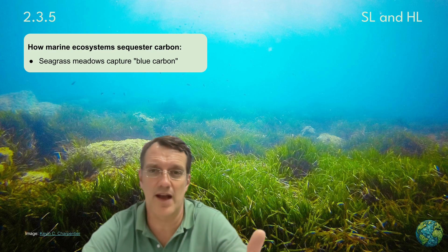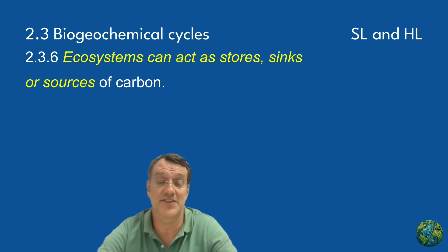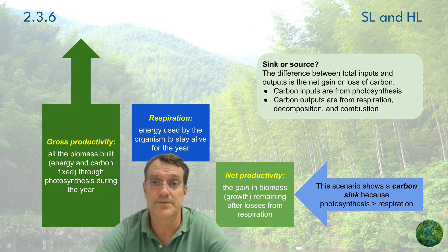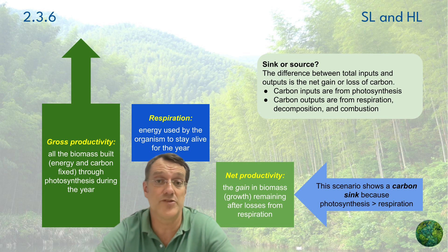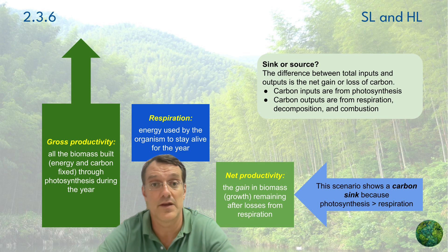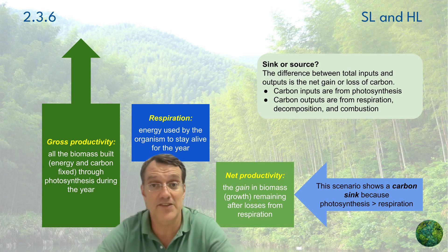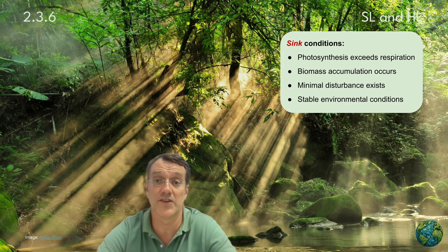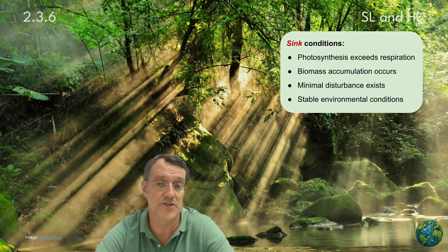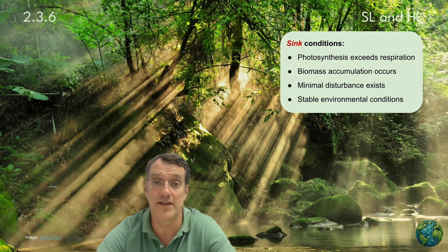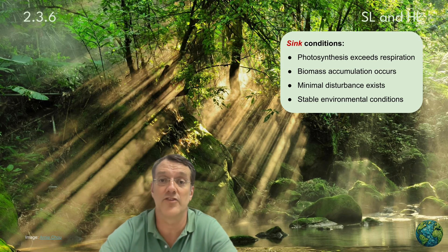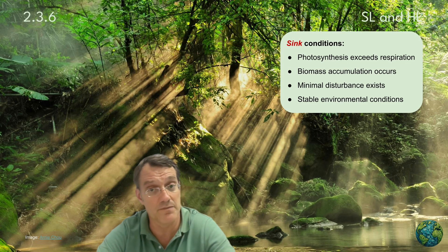These natural carbon storage systems bring us to an important concept: ecosystems can act as carbon stores, sinks, or sources depending on their conditions and how they're managed. To understand this dynamic, we need to look at productivity. When an ecosystem performs photosynthesis, it builds biomass — this is called gross productivity. Some energy is used by organisms for respiration just to stay alive. What remains is net productivity, the actual gain in biomass. The balance between these processes determines whether an ecosystem stores carbon or releases it. In healthy ecosystems, sink conditions occur when photosynthesis exceeds respiration, as seen in undisturbed forests where biomass steadily accumulates.